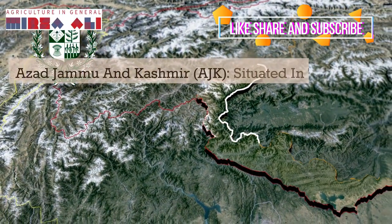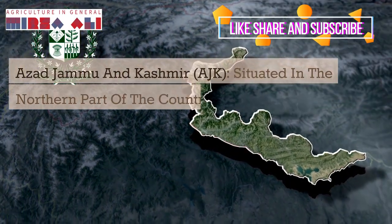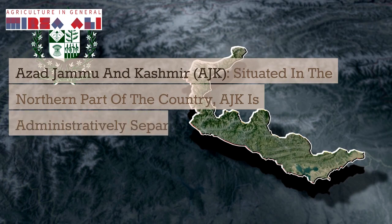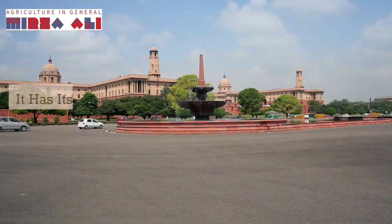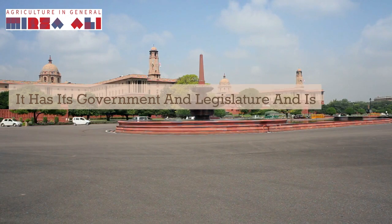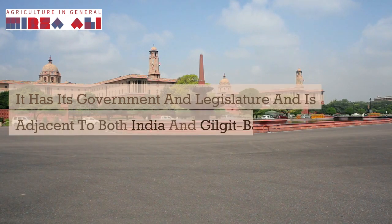Azad Jammu and Kashmir, or AJK, is situated in the northern part of the country and is administratively separate from the rest of the provinces. It has its own government and legislature and is adjacent to both India and Gilgit-Baltistan.